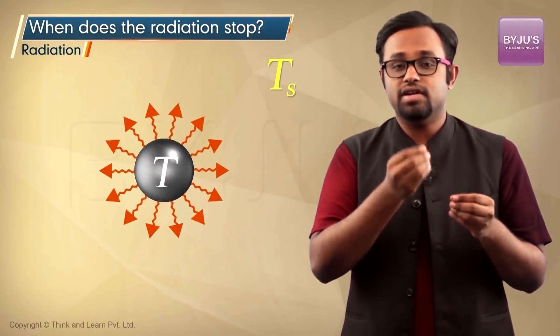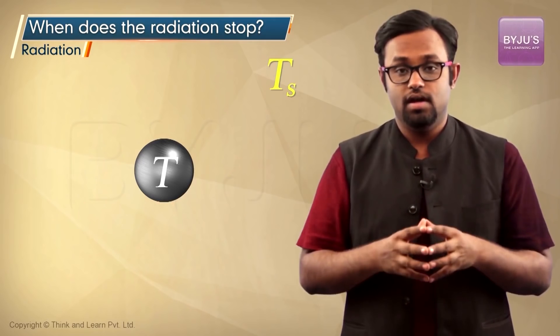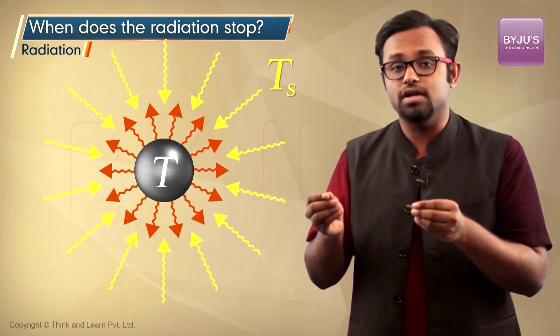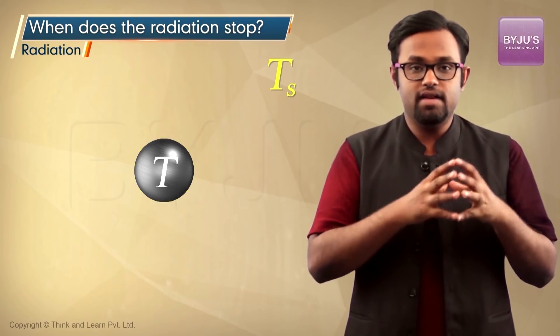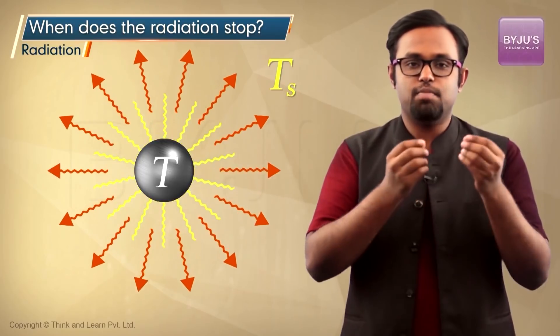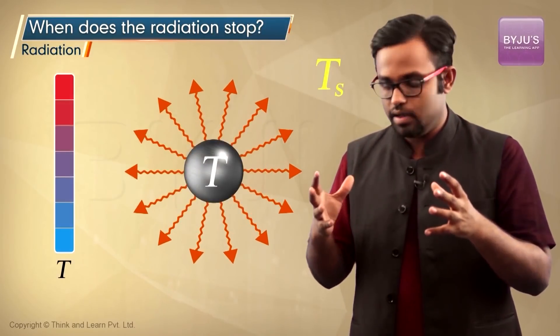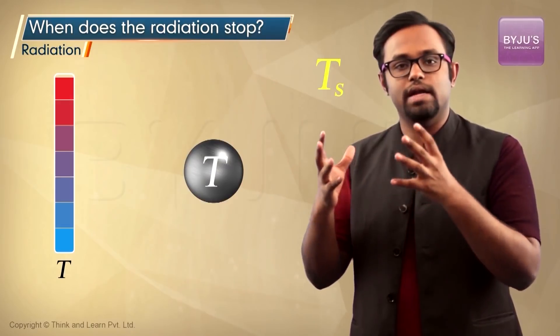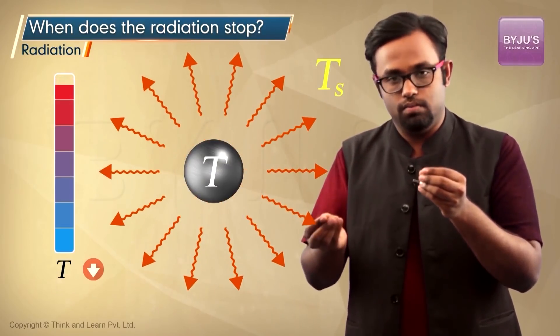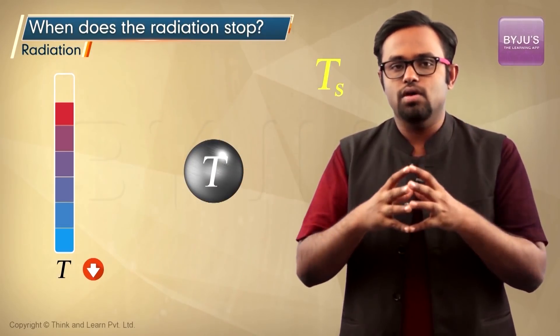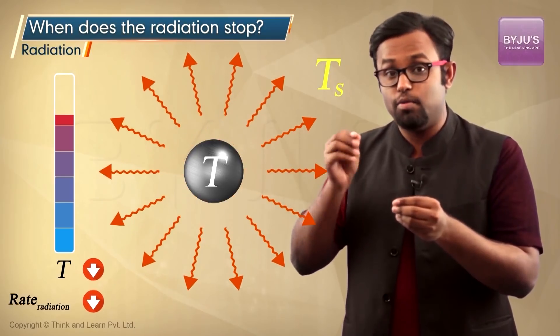Any object radiates heat with its rate proportional to its own temperature, but simultaneously it also absorbs heat at a rate proportional to the temperature of the surrounding. As bodies radiate, they lose their thermal energy and their temperature comes down. As the temperature comes down, the rate of radiation decreases because it was proportional to the temperature.